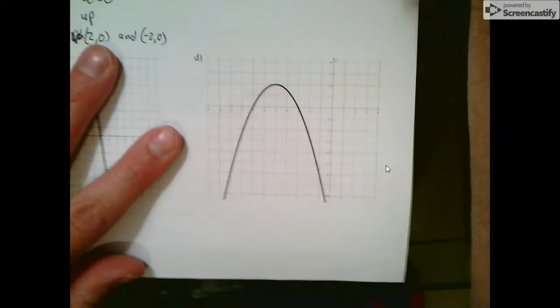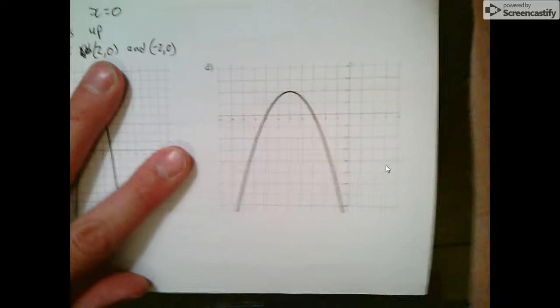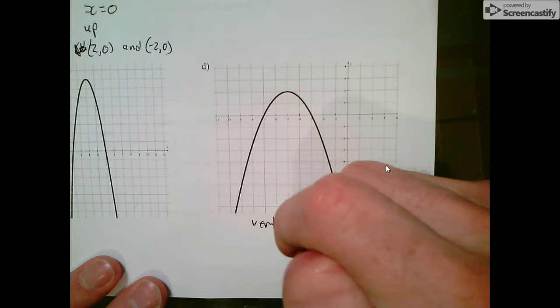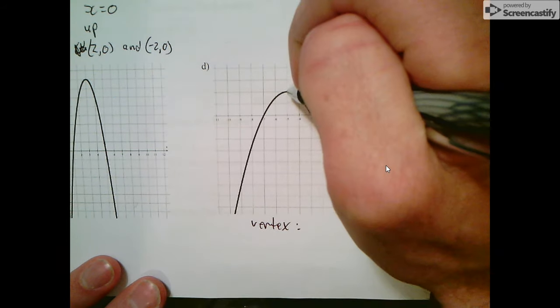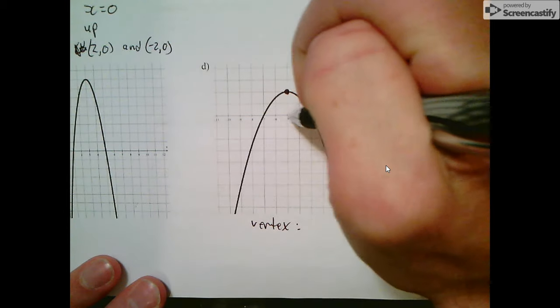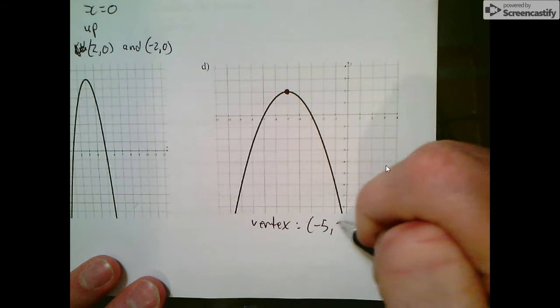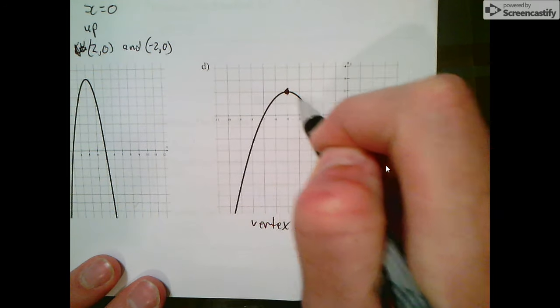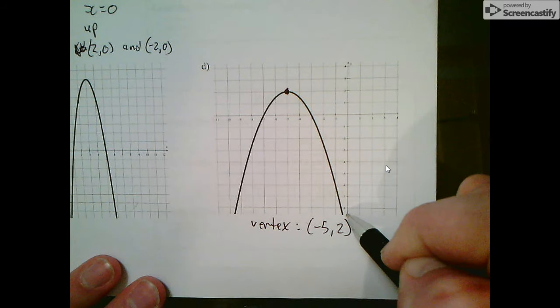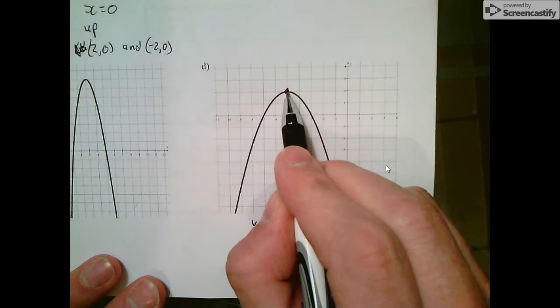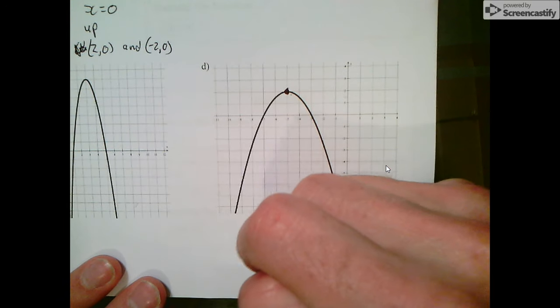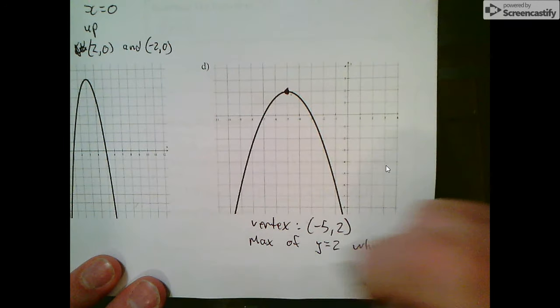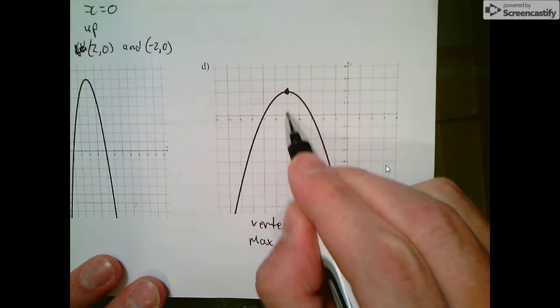I'm choosing this one, part D, because I want to show you one that's opening down. We can see here it has a vertex right here at (-5, 2). We have a max value—see how it goes up to that top value then back down again. We read graphs from left to right, so we have a max value of y equals 2 when x equals negative 5.